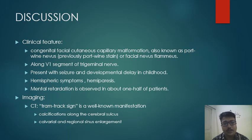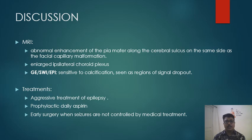On CT, the tram-track sign is a well-known manifestation representing calcification along the gyri. Calvarial and regional sinus enlargement and prominence of ipsilateral choroid plexus can also be seen. MRI shows abnormal pial enhancement along the cerebral surface ipsilateral to the facial capillary malformation. Gradient echo and susceptibility weighted imaging show regions of signal dropout signifying calcification. Treatment includes aggressive management of epilepsy either prophylactically or after onset, prophylactic daily aspirin, and early surgery when seizures are not controlled by medical treatment.